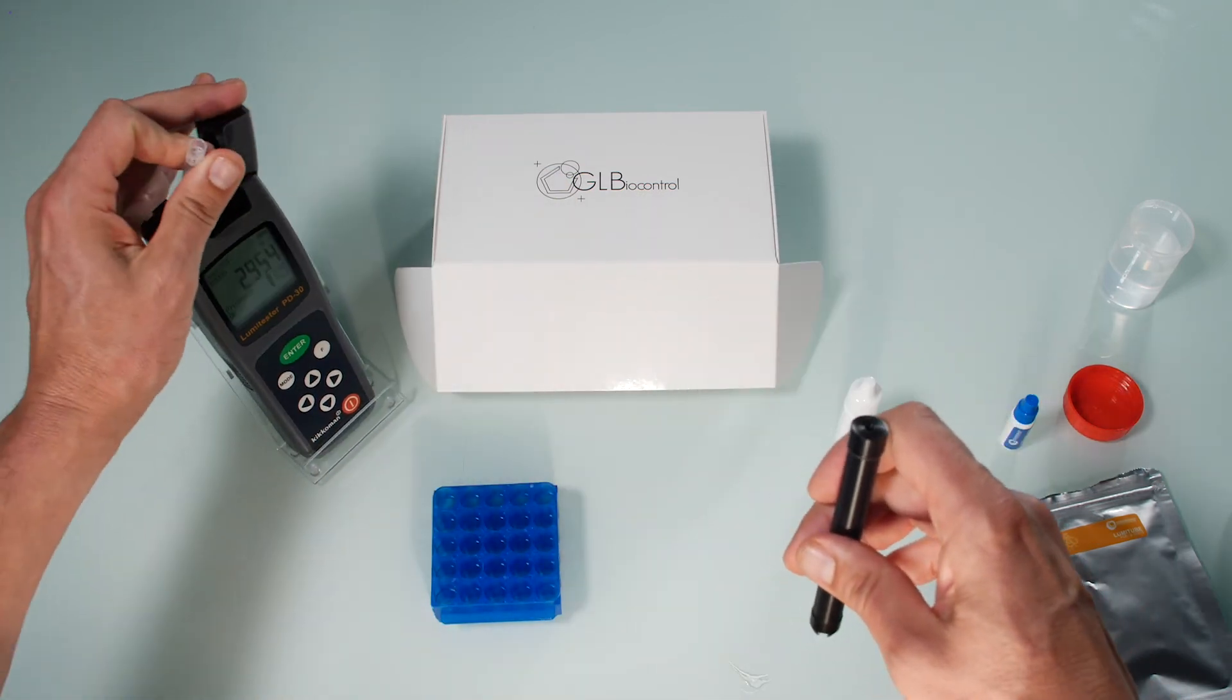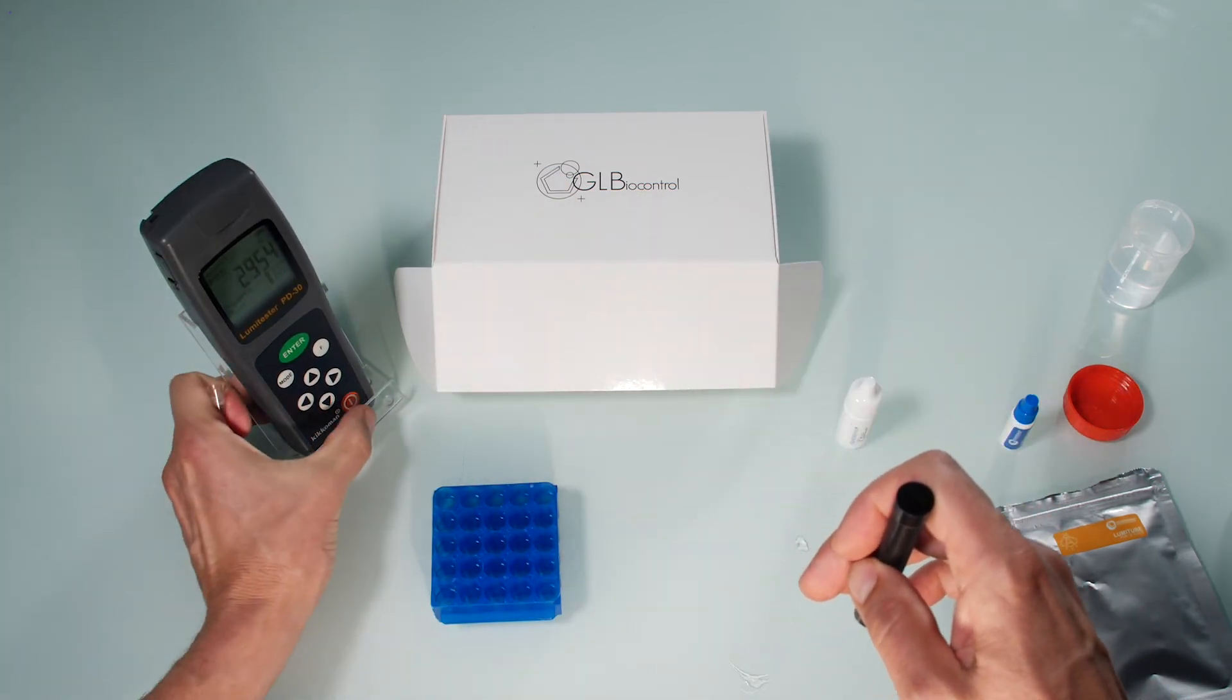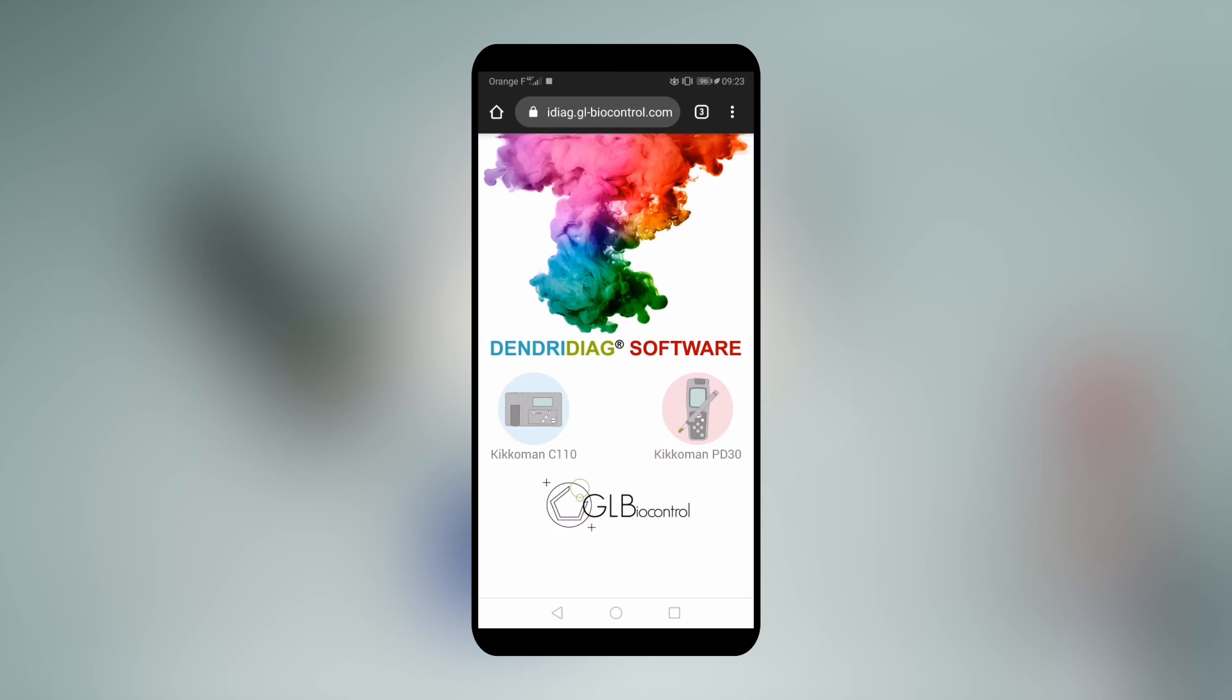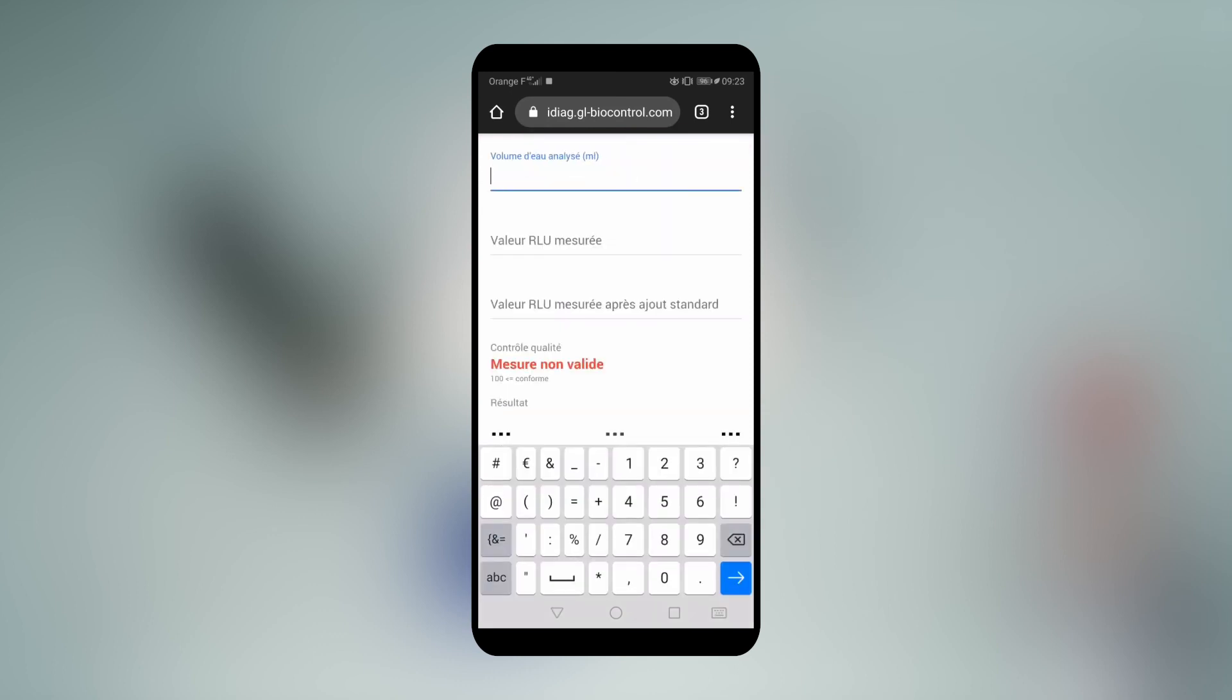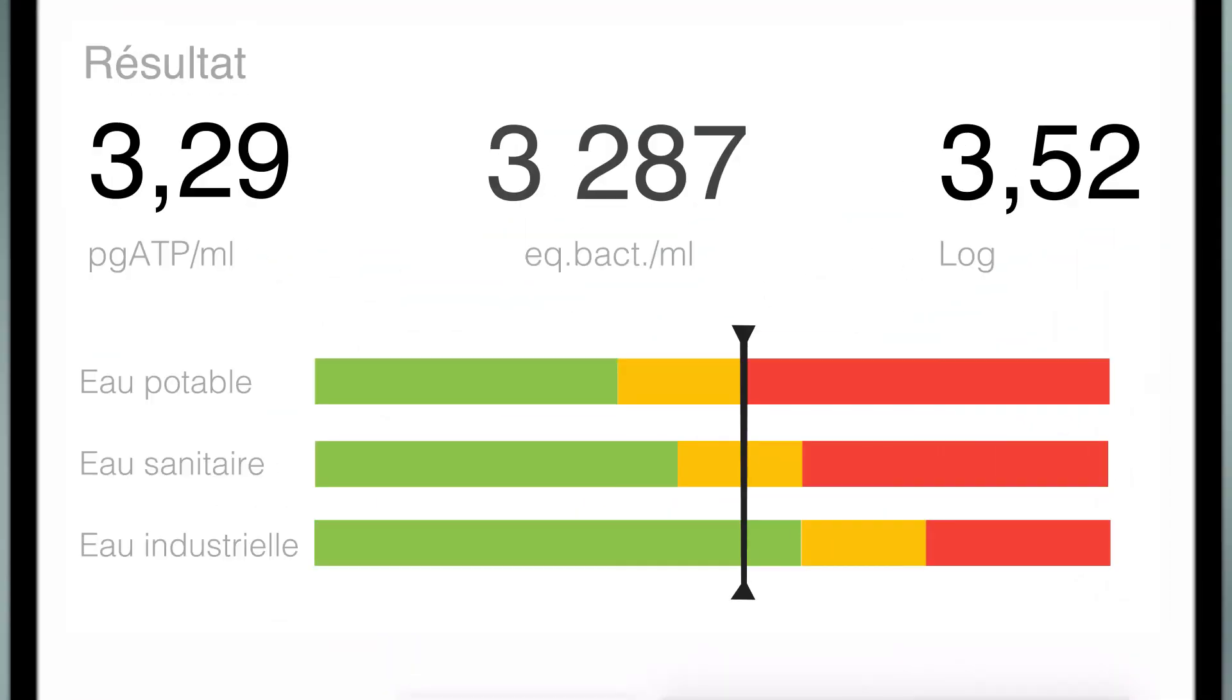Before turning off the device, remove the tube and its holder. The analysis is done. An app helps you to interpret your results directly. Enter the volume and the two results obtained. The app specifies the quantity of bacteria in your water thanks to a color code. You're informed if a corrective action is required.